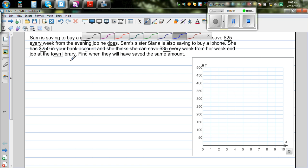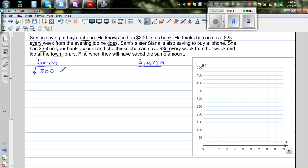Sam and Sienna are brothers and sisters. The first thing that I would like to do is to write what's the information. So Sam has $300 in his bank and he can save $25 every week. For Sienna, she has only $250 in the bank and $35 every week.